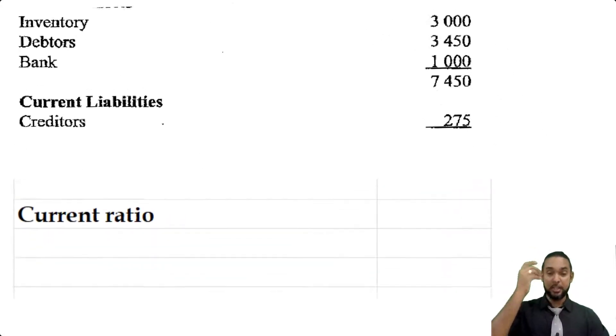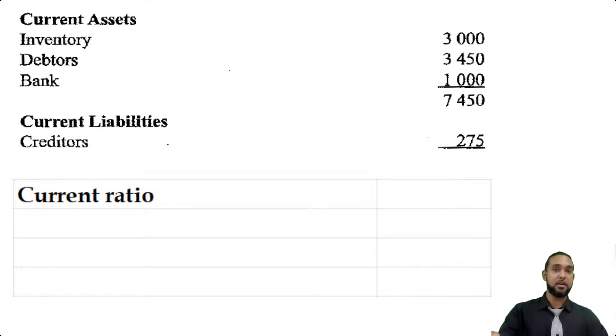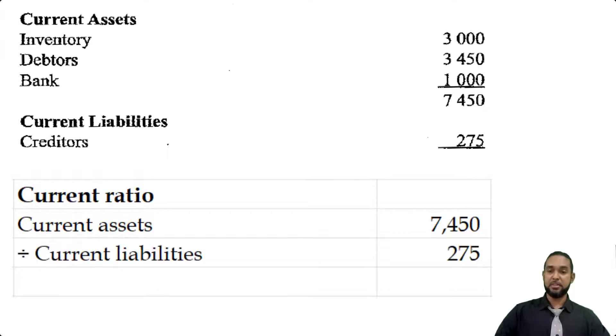Now we move on to the liquidity ratios. The current ratio. The current ratio is simply current assets divided by current liabilities. So current assets—we had a total here of 7,450—and current liabilities is 275. So we're going to divide 7,450 by 275. This is not expressed as a percentage, it's expressed as a ratio. So we get $27.09 to $1. This shows us how many dollars of current assets exist to pay off every $1 of current liabilities.